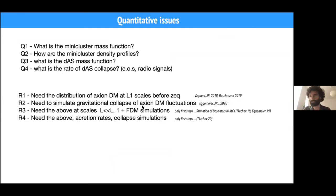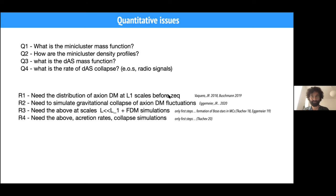This first exposition of dark matter substructure asks us to answer some quantitative issues: What is the mini cluster mass function? How many mini clusters can we have per unit mass? What are the mini cluster profiles for studying microlensing? What is the dilute axion star mass function? What is the rate of axion dark matter dilute axion star collapse? In order to answer all these questions, we need to know the distribution of axion dark matter at the smallest scales before matter-radiation equality. This has been attempted by numerical simulations in our work and also the work of Sehgal et al. and Buschmann et al. last year.